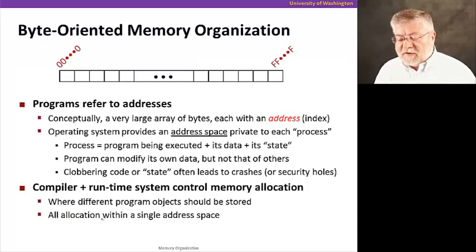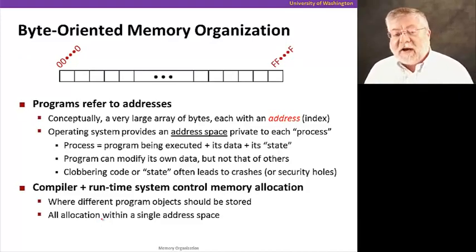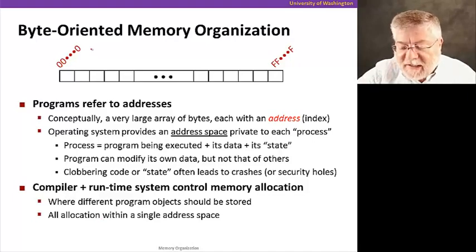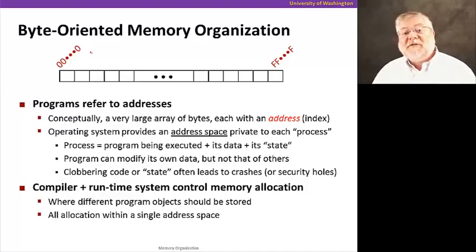The first thing we should understand is that memory has been organized also in bytes. Basically, it's just a big long list of bytes. And each one of these bytes has an address or an index that we can use to refer to it. We start at the index that begins with all zeros and we end at the index of all ones, or all F's in hexadecimal notation.